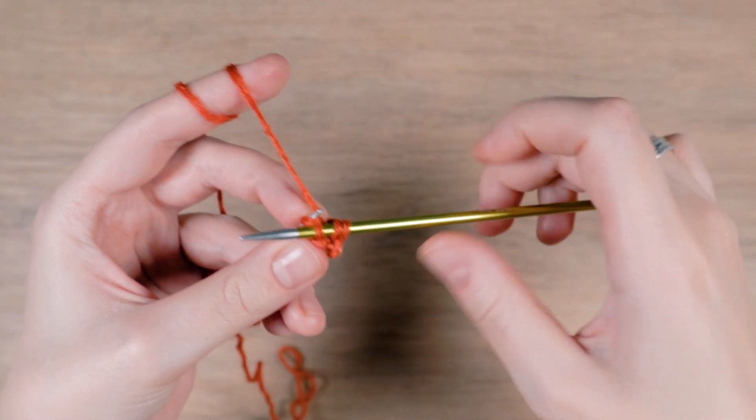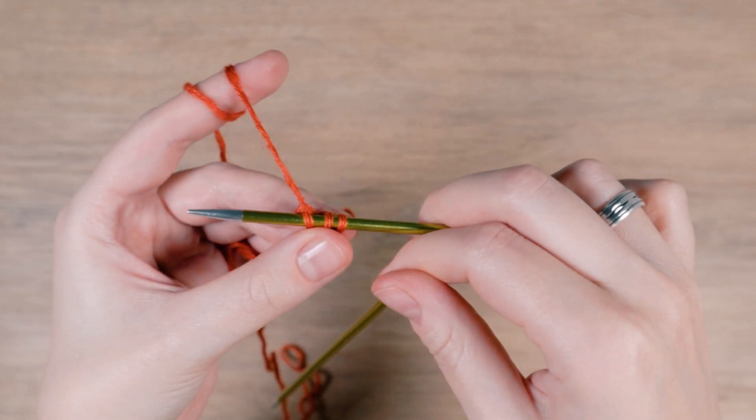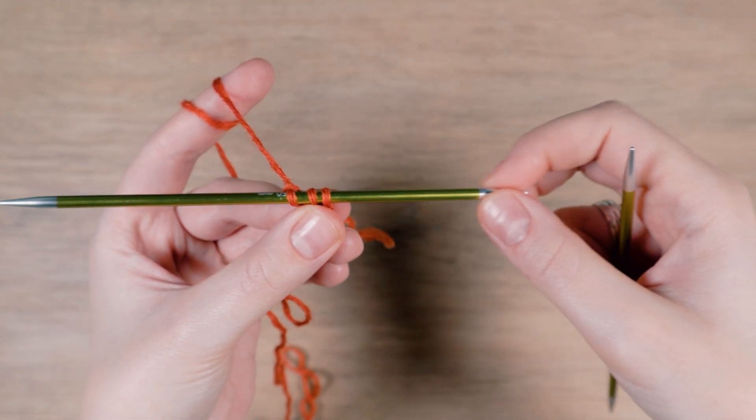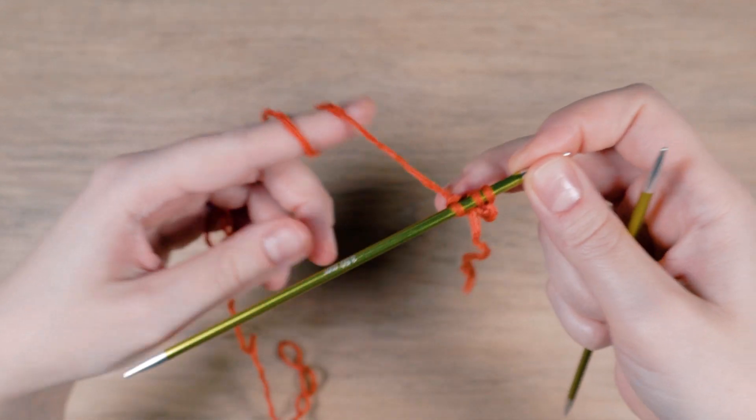This is one I-cord row. Repeat the same thing twice more. So slide the stitches over and knit them.